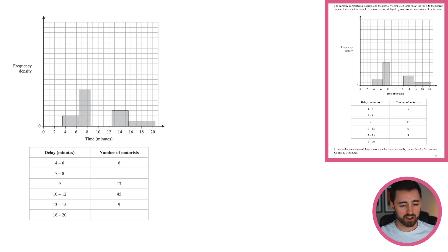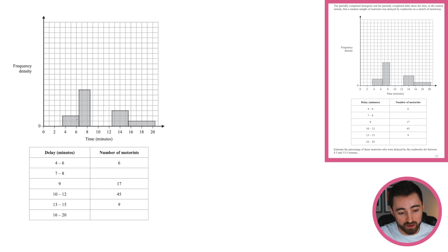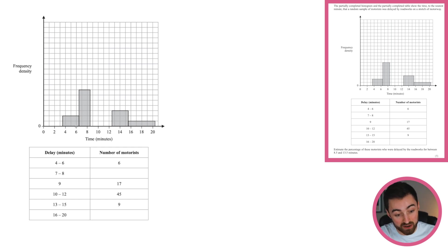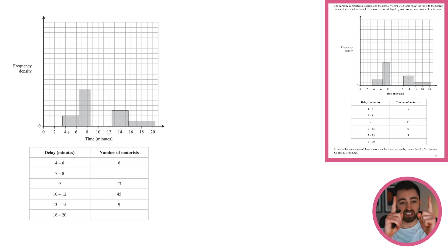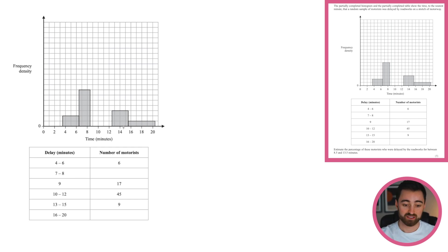A quick word about the class boundaries. These groups look like 4 to 6, but this is actually 3.5 to 6.5 — because it's been rounded to the nearest minute. If you were delayed by 3.5, 3.6, or 3.7, when rounded to the nearest minute that goes to 4. And similarly, 6.1 up to 6.5 rounds down to 6. That's why you extend 0.5 out on either side — so 7 to 8 is actually 6.5 to 8.5, and 16 to 20 is 15.5 to 20.5.